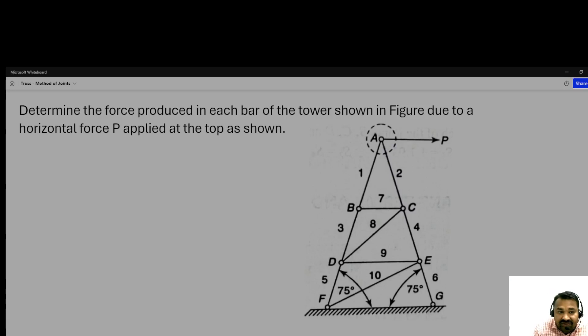Welcome. Let us solve this truss problem using the method of joints. The problem statement is: determine the force produced in each bar of the tower shown in figure due to a horizontal force P applied at the top as shown.